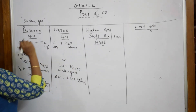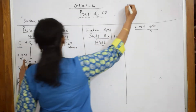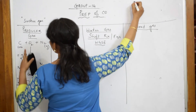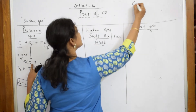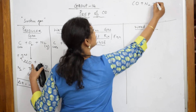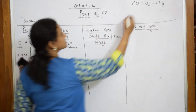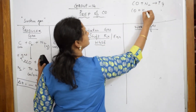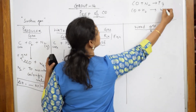So CO + H2 is your water gas. And to summarize: CO + N2 is producer gas, and CO + H2 is your water gas.